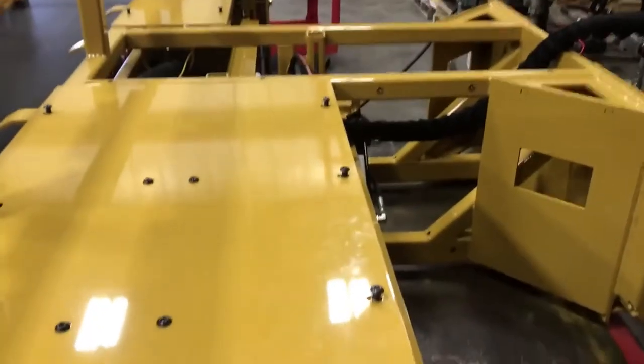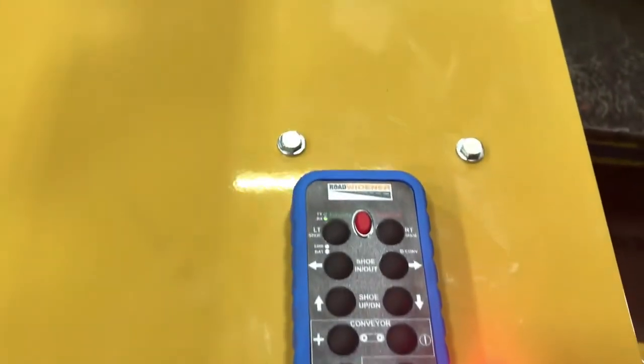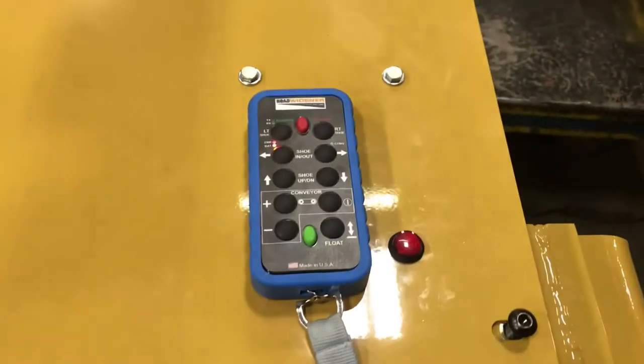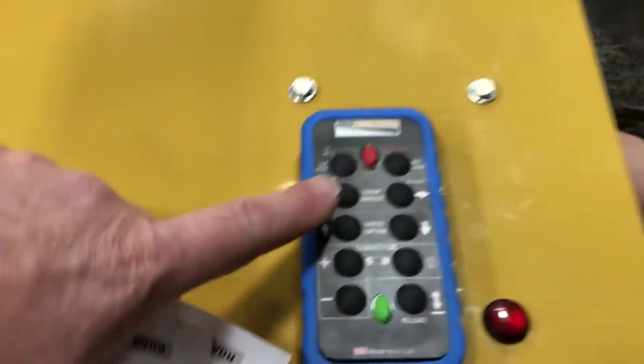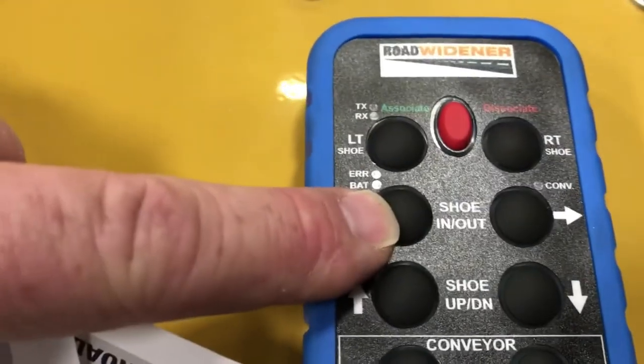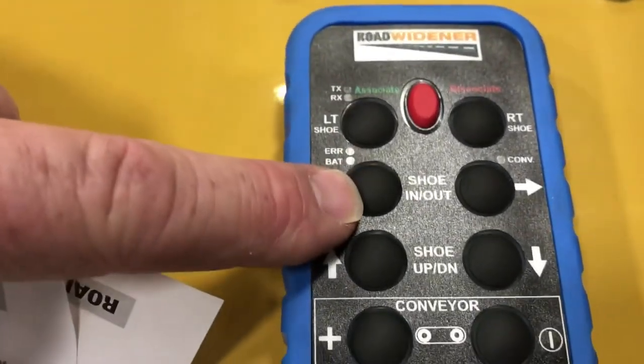At this point we're going to repeat the procedure for the right hand side. We need to return the power to the machine off and also the power to the remote off. Then we'll simply repeat the procedure, depressing the right hand learn button instead. This would be the left hand button and this would be the right hand.